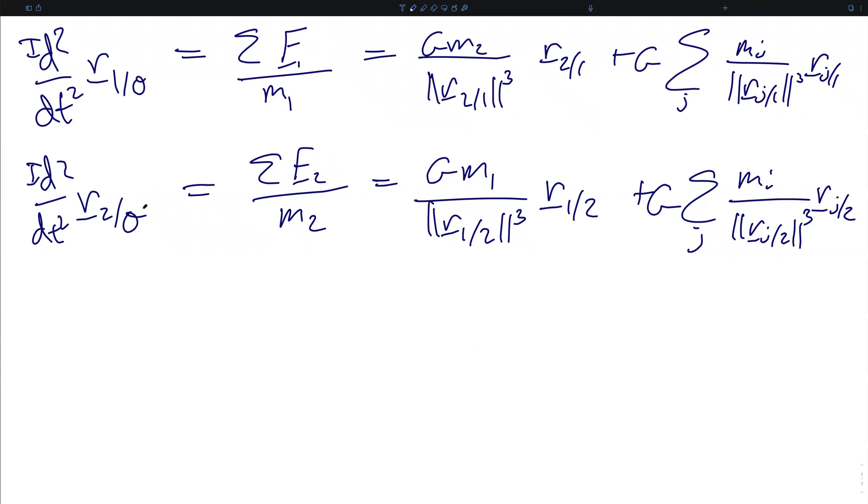And exactly equivalently, we can write the same thing for the primary orbiting mass m2. The second derivative of R2 rel 0 is the sum of the forces on mass m2 divided by m2, and we're going to split this into the effects on m2 due to the primary m1, and that's gm1 over R1 rel 2 norm cubed in the direction of R1 rel 2, which as usual is negative R2 rel 1, and then everything else, the gravitational constant times the sum of the jth perturbing mass over Rj rel 2 cubed in the Rj rel 2 direction.